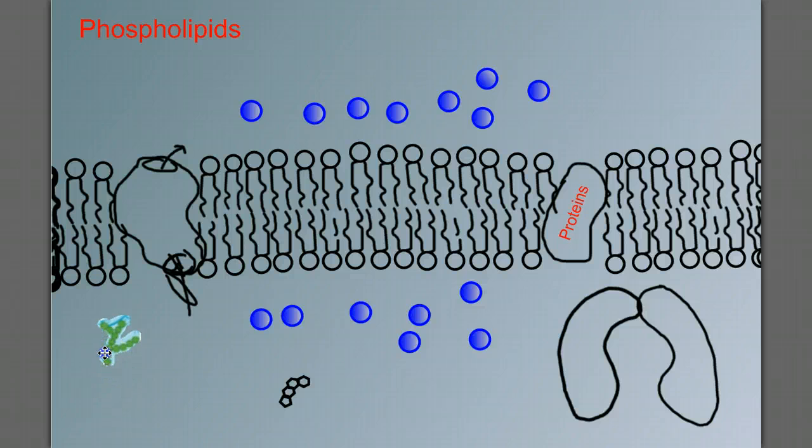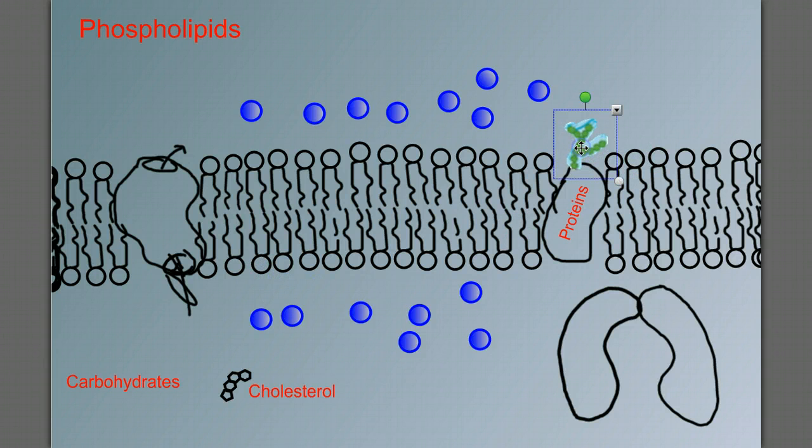In addition to the proteins, we also have carbohydrates and cholesterol. So the carbohydrates sometimes will be attached to the proteins. There can be other ones attached to or in the membrane here.